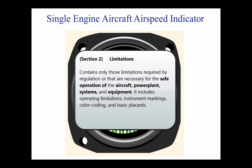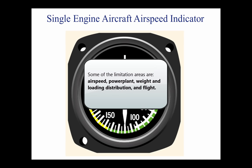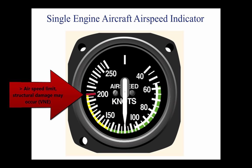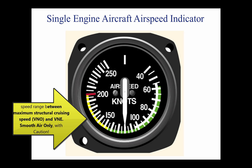Section 2: The Limitations section contains only those limitations required by regulation or that are necessary for the safe operation of the aircraft, powerplant, systems, and equipment. It includes operating limitations, instrument markings, color coding, and basic placards. Some limitation areas are airspeed, powerplant, weight and loading distribution, and flight. Airspeed limitations are shown on the Airspeed Indicator by color coding and on placards or graphs. A red line on the ASI shows the Never Exceed Speed, VNE. A yellow arc indicates the speed range between maximum structural cruising speed and VNE, for smooth air only and only with caution.